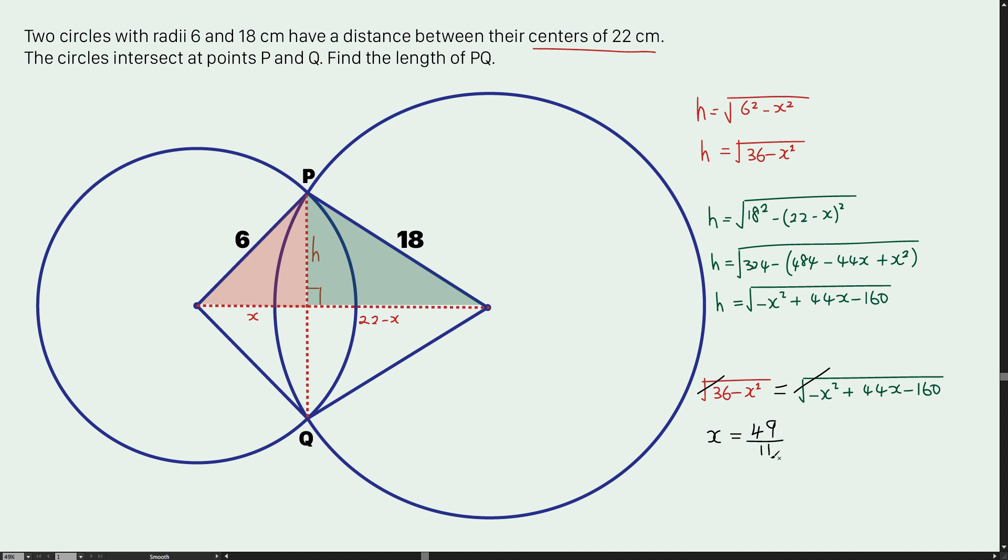Now I have to find what is the value of h by substituting the value of x into this equation. That would give me h equals square root of 1955 over 11. This is the value of h.